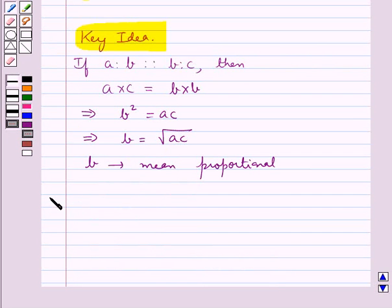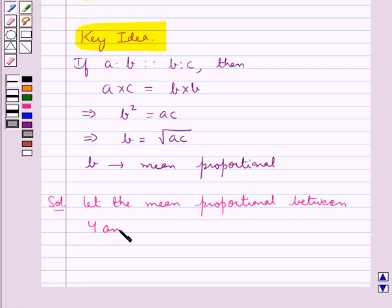Now we proceed on to its solution. We assume the mean proportional between 4 and 25 is equal to x. Then this means that 4 is to x is proportional to x is to 25.